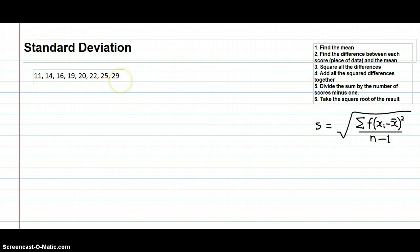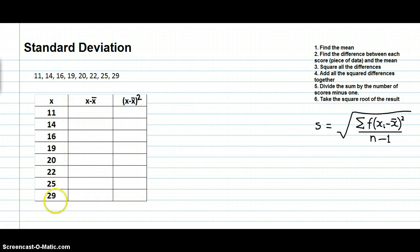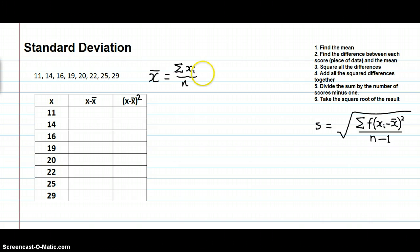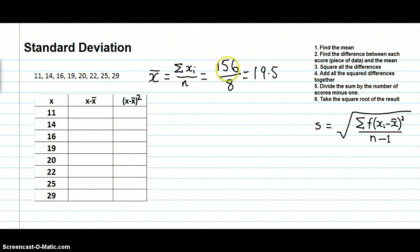Let's apply this to some data. To find the standard deviation we set up a table with three columns: the scores (x values), the score minus the mean (x minus x-bar), and the score minus the mean squared. First we need the mean — x-bar is found by summing all x values and dividing by n. Adding up all the scores gives 156, and there are 8 scores, so n = 8.